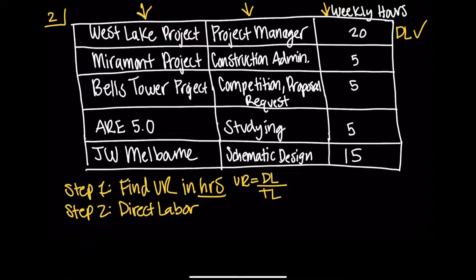On the Miramont project, Jane worked as a construction administrator and has five hours in that role. Construction administration — is that considered direct labor? Yes, it is. Bell's Tower project: competition proposal request, five hours. Is this direct labor? If you're working on a competition in an architecture firm setting and you've just received a proposal request, you don't have a client yet. So you can't charge your hours directly to a project because there is no client to bill to yet. So those five hours are not direct labor.